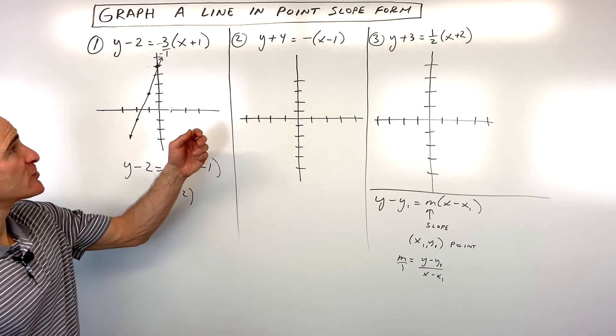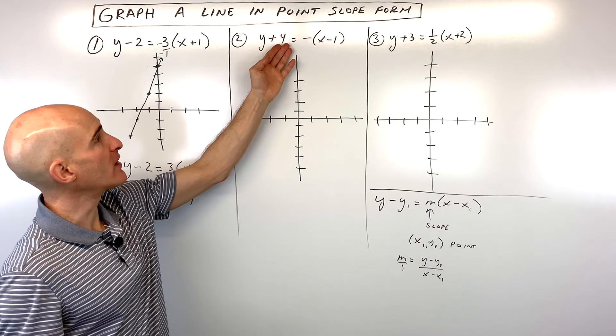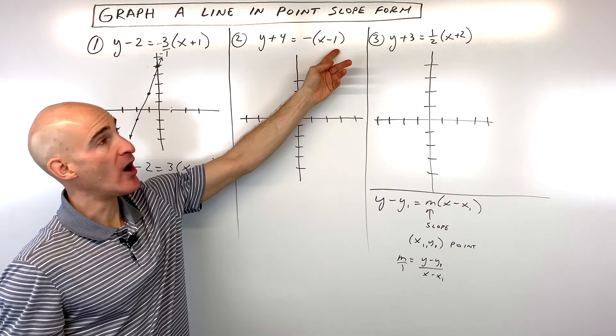So let's do another example, see if you can follow me here. Number 2, we've got y plus 4 equals negative times x minus 1. So when you see this negative here, you can think of it as negative 1, because negative 1 times anything is going to be just like multiplying by a negative. And you can write any number as a fraction by putting it over 1. So when we do our slope, it's the rise over the run. The numerator is the rise, the vertical change, and the denominator is the run, that's the horizontal change. But you can see it's going through the point positive 1. Remember, the x-coordinate is grouped with the x, the y-coordinate is grouped with the y, but it's the opposite sign. So it's positive 1, negative 4.